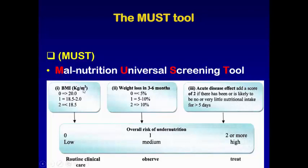The first part of MUST is the BMI score: the surface area is the square of the height. If the body mass index is about 20, we give zero. If between 18.5 to 20, we give one. If it is less than 18.5, we give two.